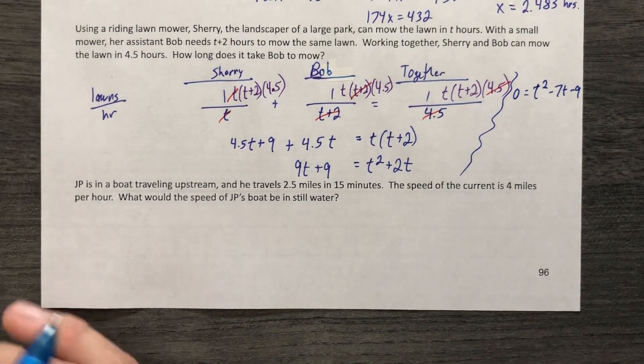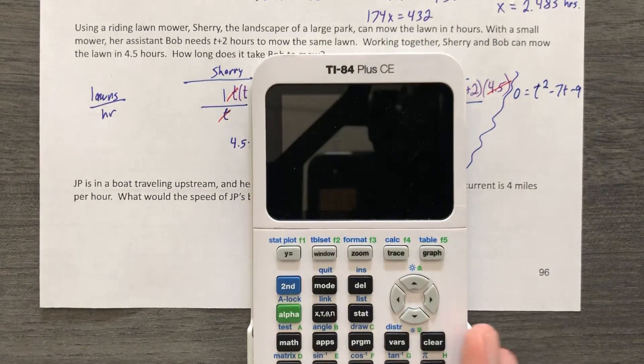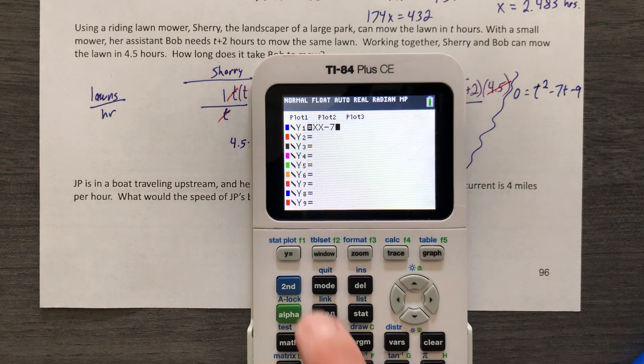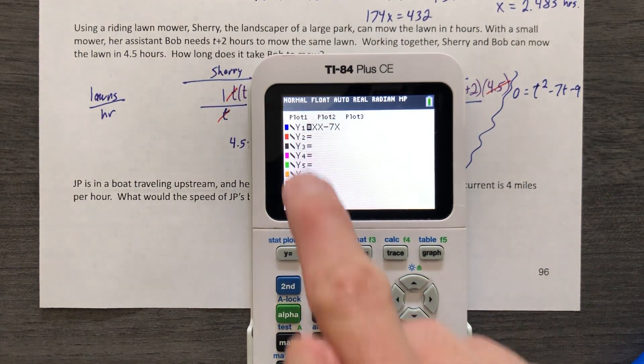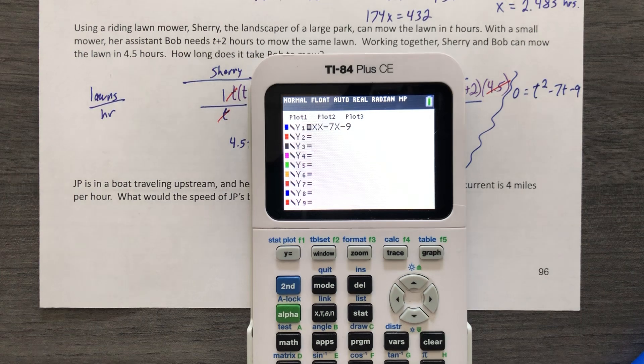Wah. What I am going to do instead, and you can use Desmos, I'm going to graph this. I'm going to use X instead of T. I'm going to use XX instead of X squared. Works the same. It's faster to type, in my opinion.